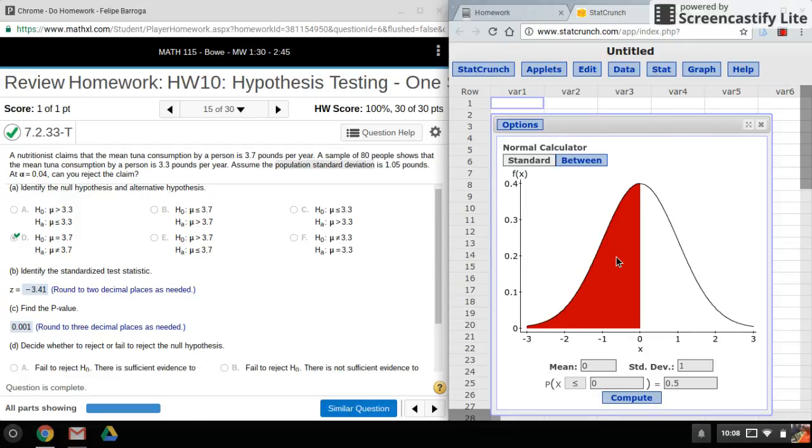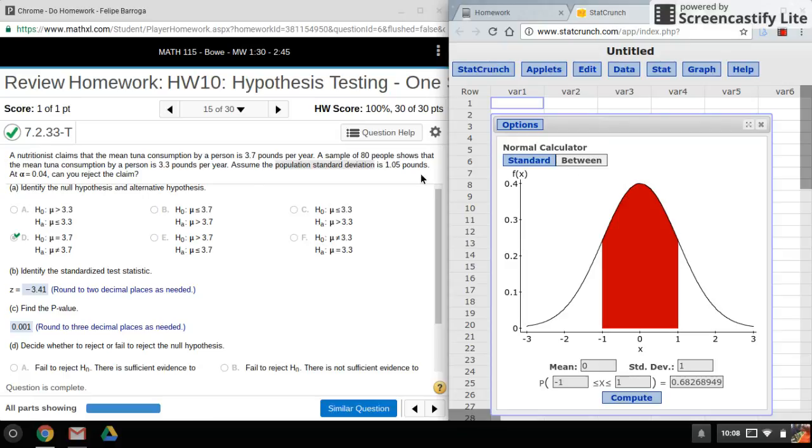Now because StatCrunch can't do 'outside', we'll have to do 'between', because the critical values are actually in the tails. So for the z, what we'll do is we'll leave the mean at zero, standard deviation at one, and instead of using our alpha here, we'll actually do 1 minus alpha and put that here.